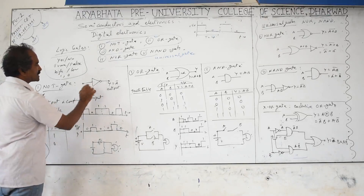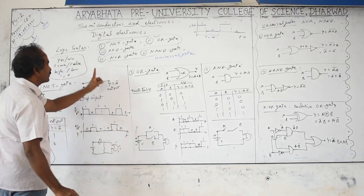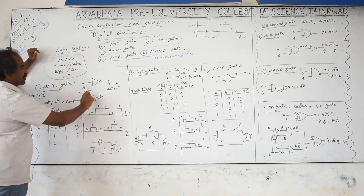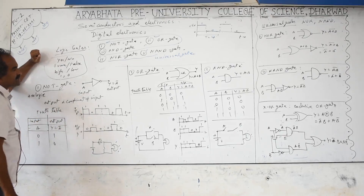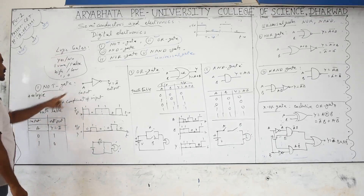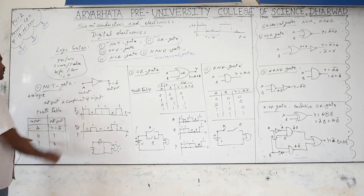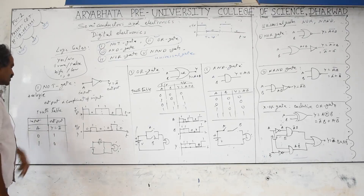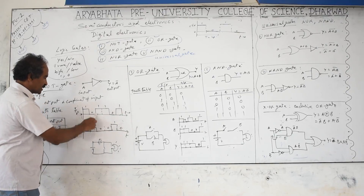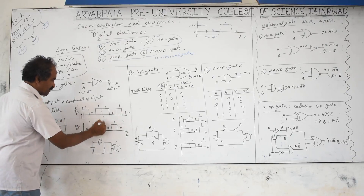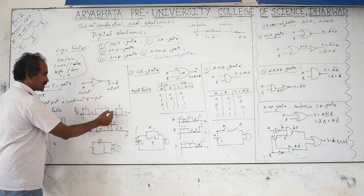NAND gates are called universal because they can be used to construct NOT, AND, and OR gates. The NOT gate reverses the input: if input is high, output is low. Its symbol looks similar to a diode but with a bubble (hollow circle) at the output. The output Y = Ā (A-complement). Truth table: when A = 0, Y = 1; when A = 1, Y = 0. Input pulses and output pulses are inverted.